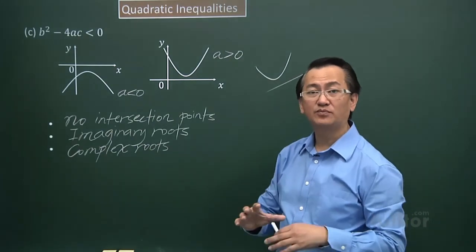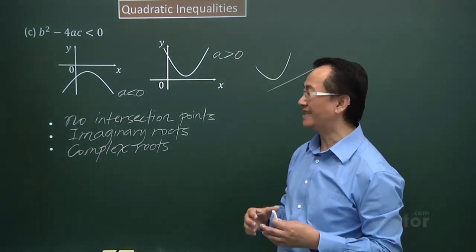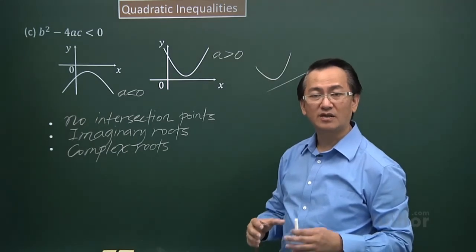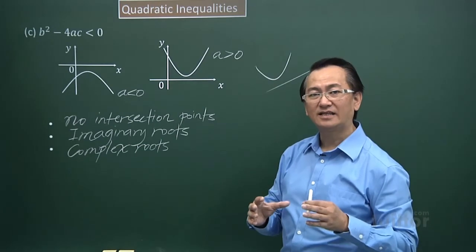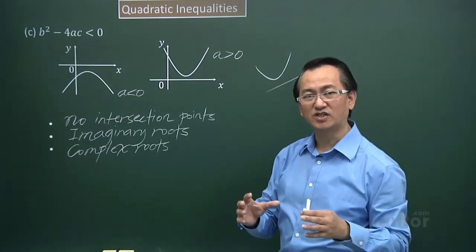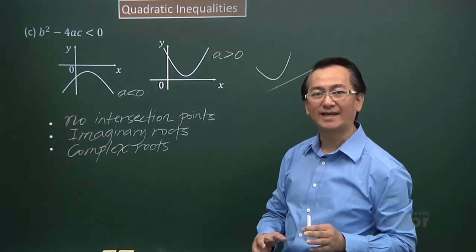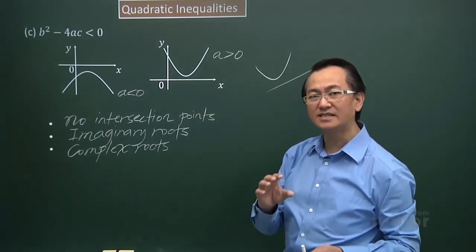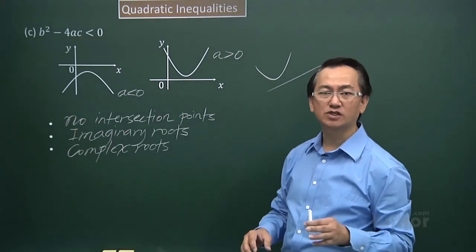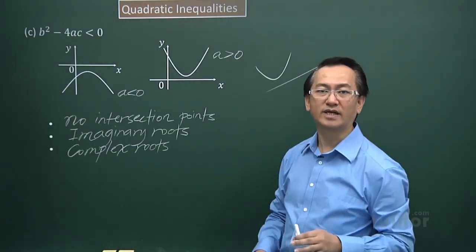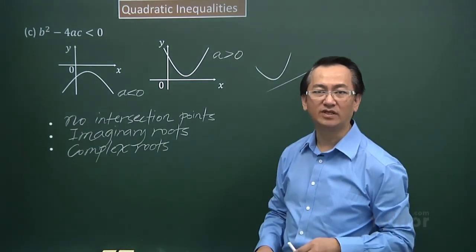We have covered the breadth of the nature of roots. The important point to take note of is the key expression d, which is b squared minus 4ac — the discriminant, and it is part of the general solution of the quadratic equation. We have come to the end of this video.